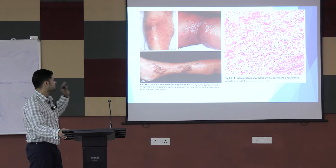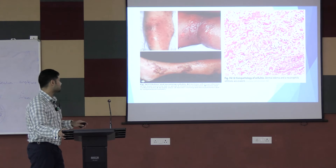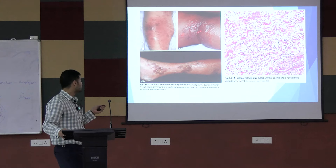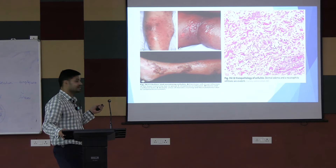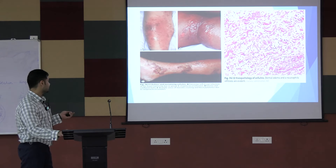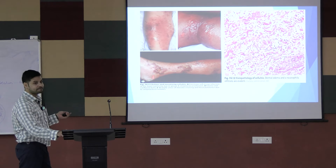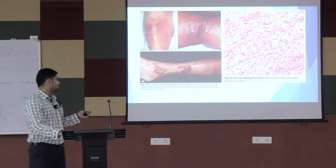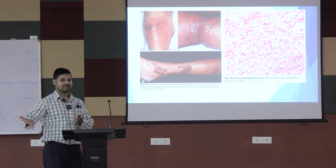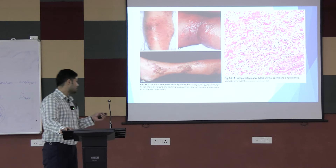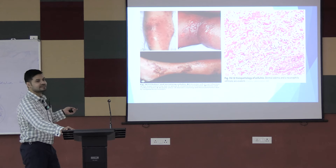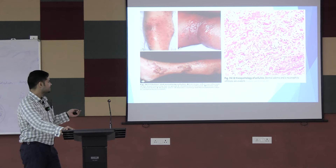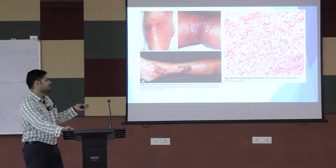Cellulitis shows extensive soft tissue involvement with painful edema and bullae. Importantly, when bullae rupture, they leave a peripheral collarette of scales that looks like fungal infection. However, cellulitis has tenderness and inflammation — no itching. Quacks sometimes misdiagnose this as fungal infection and prescribe antifungals or steroids, which is incorrect.